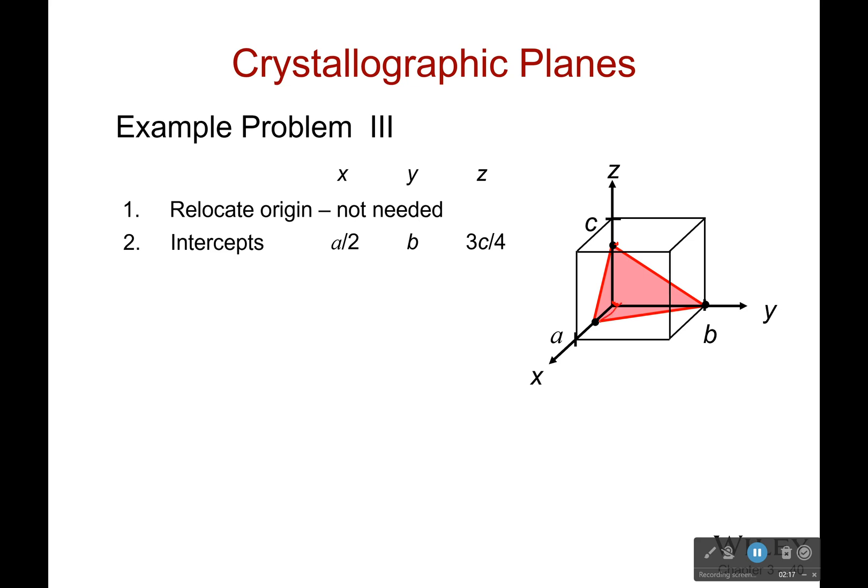So intercepts are a over two. I'll go half a unit a in this direction. I go a whole unit B in this direction and three quarters units of unit C in that direction. Then I invert them. So two over A, one over B and four thirds C. Say four over three C, gotta be careful of that. Then I get rid of the A, B and C. Now the two, one and four thirds, which isn't good here. So I gotta get rid of all those fractions. And so I have six, three and four.